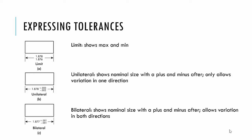Bilateral would have a plus and a minus after and allows there to be variation in both directions. While this example includes variation that is the same up and down, that's not necessarily the case. It could be larger in one direction. So three types of ways we can express tolerances: limits, unilateral, and bilateral.